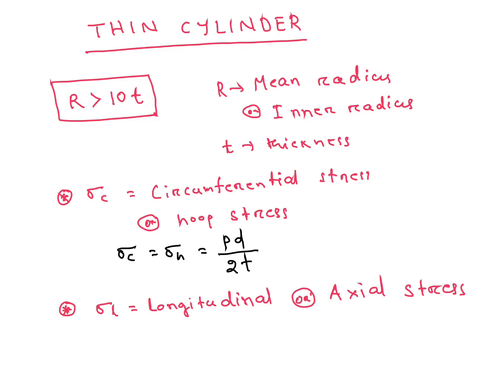Sigma L is longitudinal or axial stress. Sigma L equals PD by 4T. One more important point: Sigma C equals 2 times Sigma L, which was once asked in the ISRO examination.